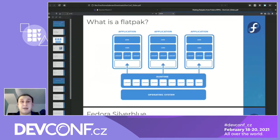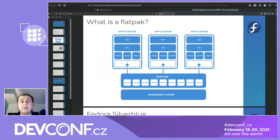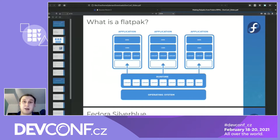So what is a flatpak? Flatpak is some kind of container. Most of you have used RPM or Debian packages. When you want some application, you have to download the application itself plus many dependencies. It can happen that two or more applications need one dependency but in different versions. Flatpak solves this problem by making something called a runtime. In this runtime, there are libraries that are commonly used across many applications.